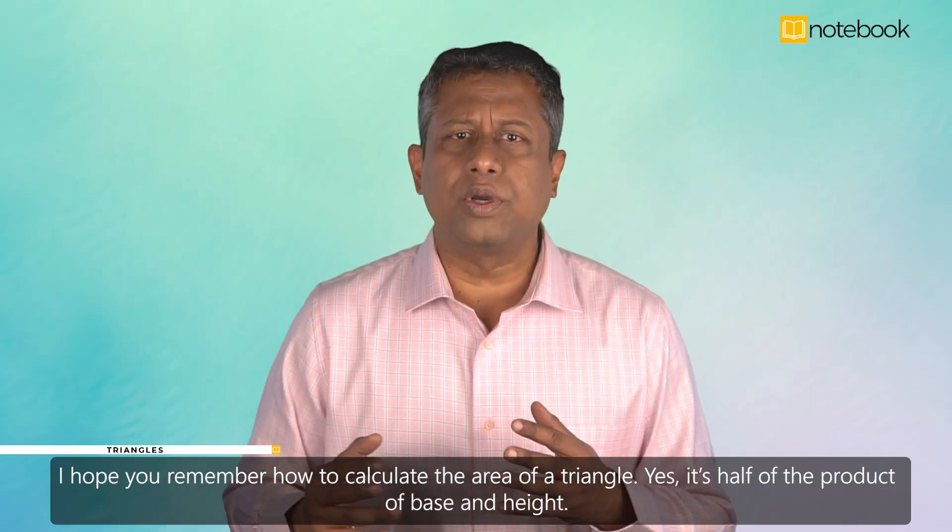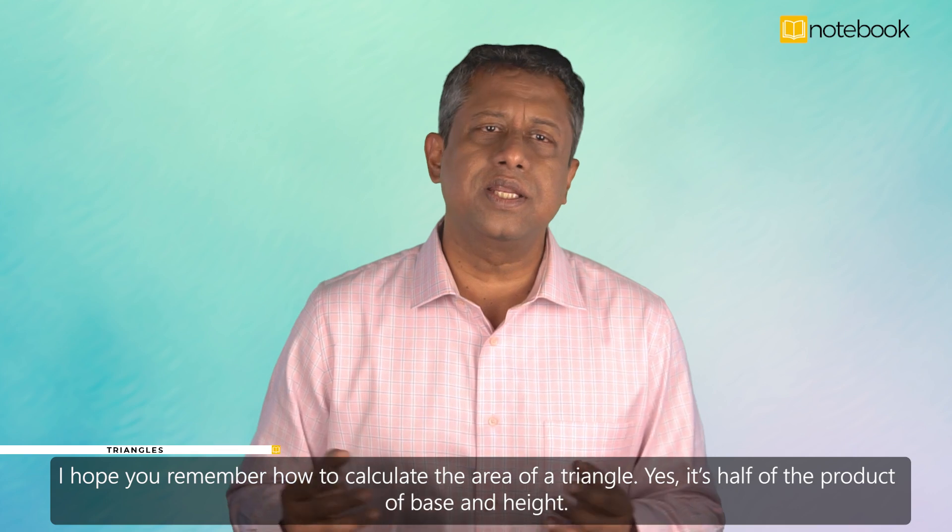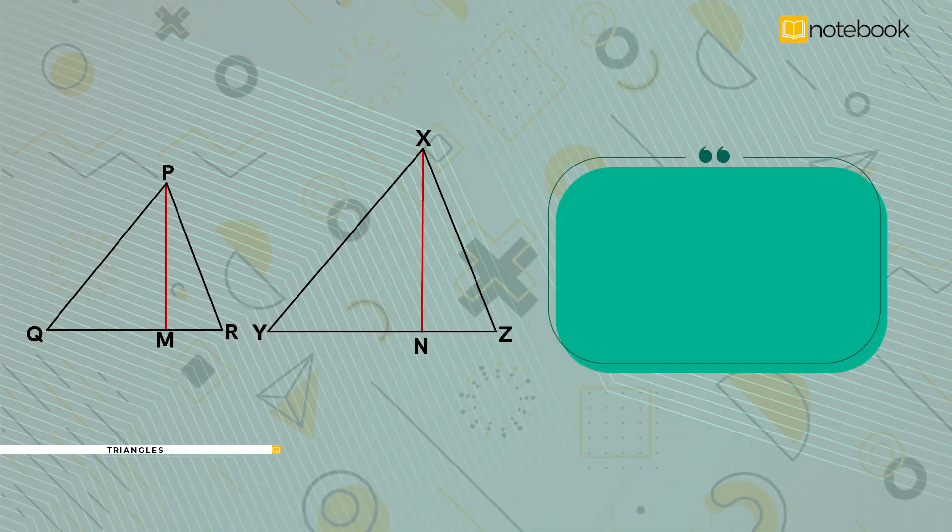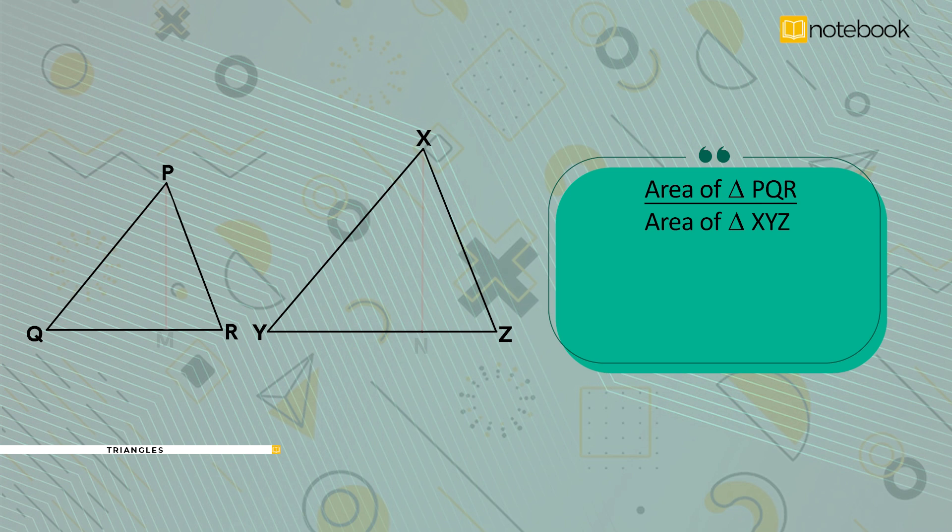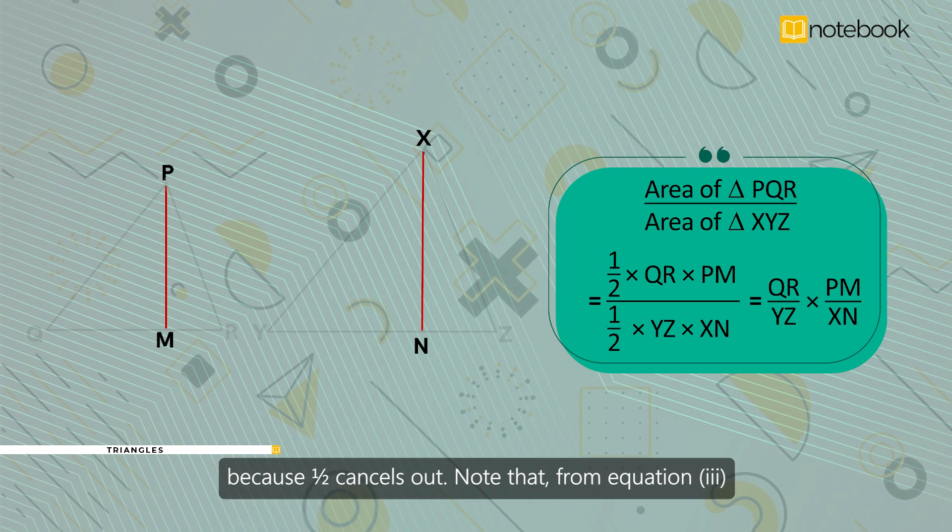I hope you remember how to calculate the area of a triangle. Yes, it's half of the product of base and height. Now, area of triangle PQR by area of triangle XYZ is equal to half into QR into PM, whole divided by half into YZ into XN, is equal to QR by YZ into PM by XN because half cancels out.